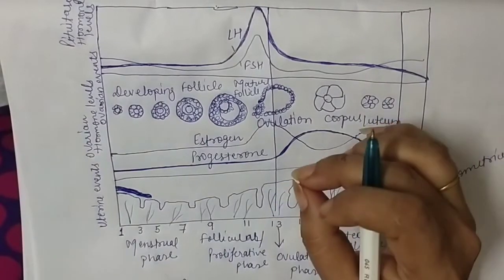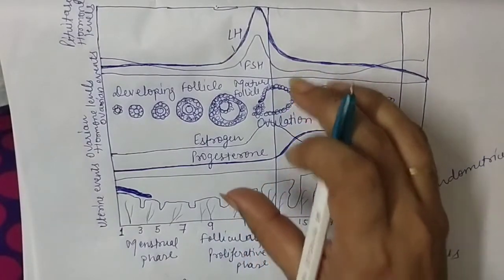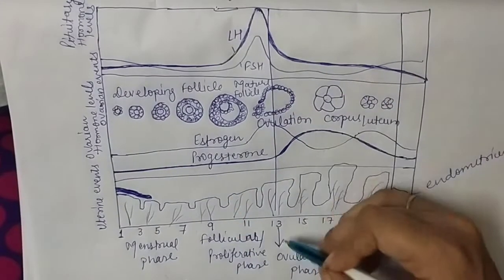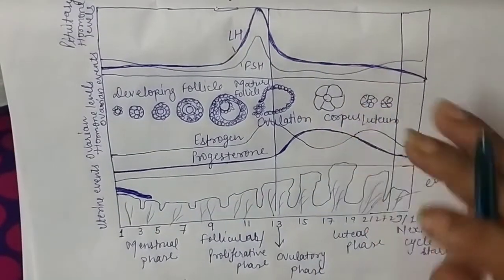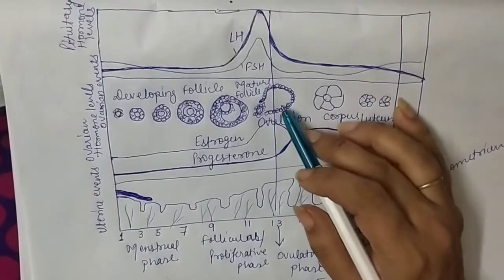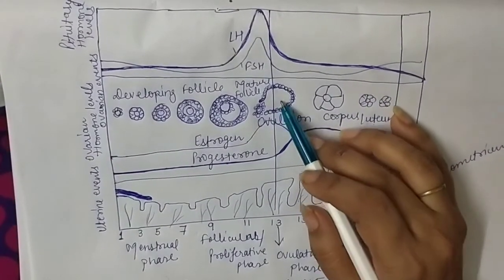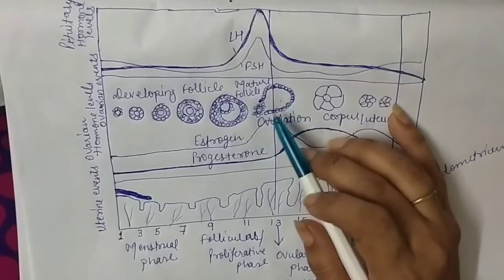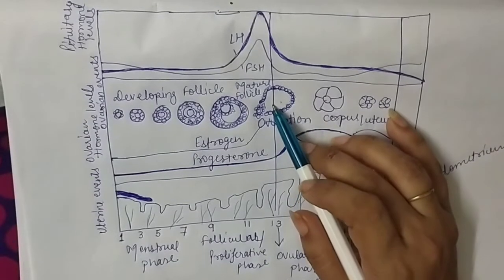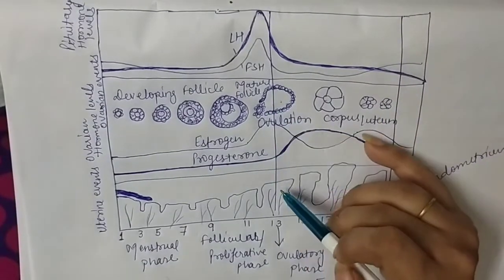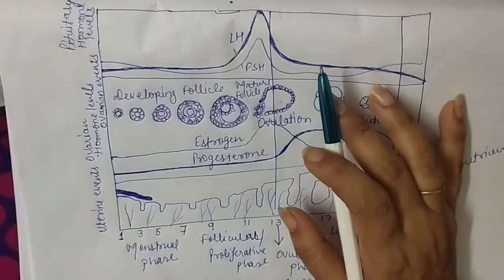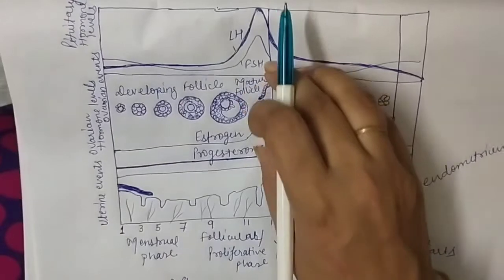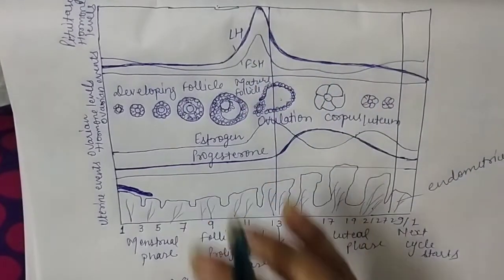The cycle starts when the ova becomes mature. When the ova matures in the ovary, that duration is at the mid-point of the cycle, around day 13 or 14. During this phase, if the ova doesn't get sperm available, ovulation will occur and the ova will release, but if sperm is not available, the ova will die and the endometrium lining will also die, and the menstrual cycle will restart.